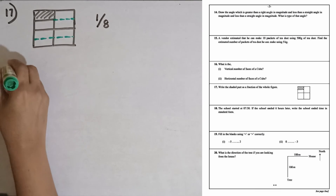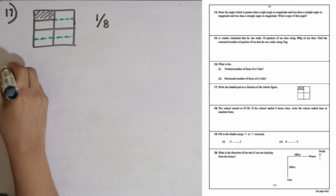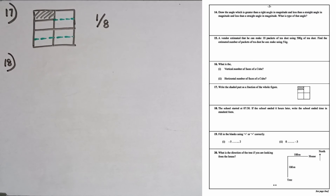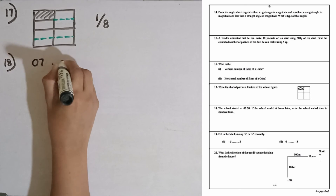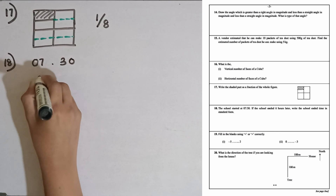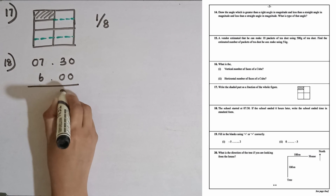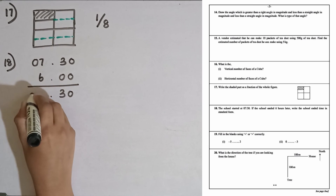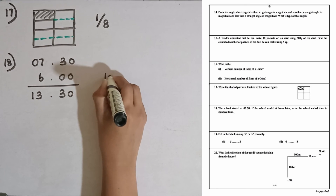Question number eighteen: the school started at 7:30. If the school ended 6 hours later, write the school ended time in standard form in hours and minutes. 7 hours 30 minutes, then we add 6 hours 0 minutes. The addition gives 13 hours 30 minutes. So the ending time in standard form is 13:30.